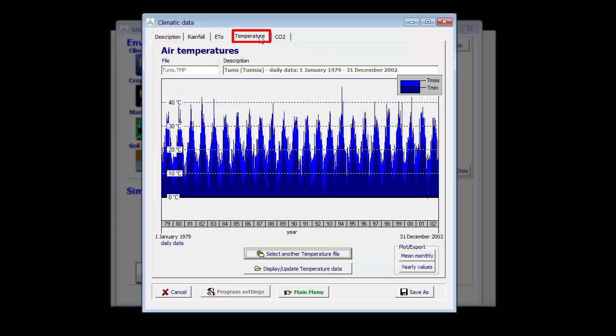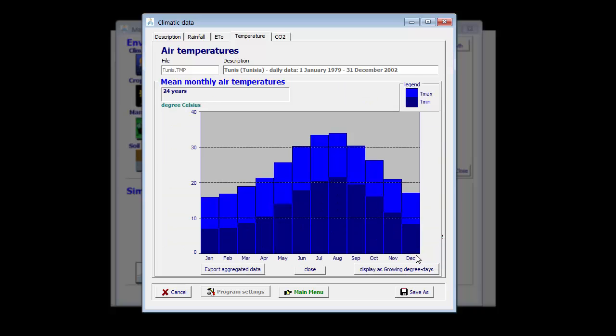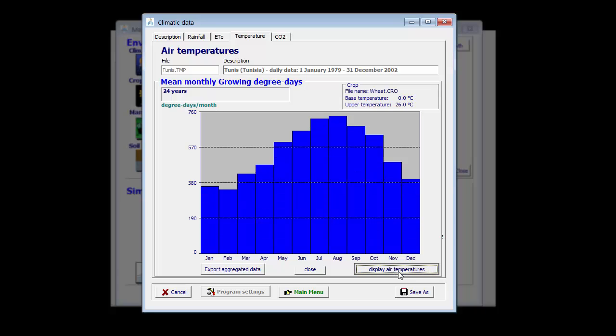In the temperature tab sheet, the maximum and minimum air temperature are displayed. We can also display it as growing degree days. That is of course only valid for the selected crop, which is in this case wheat.